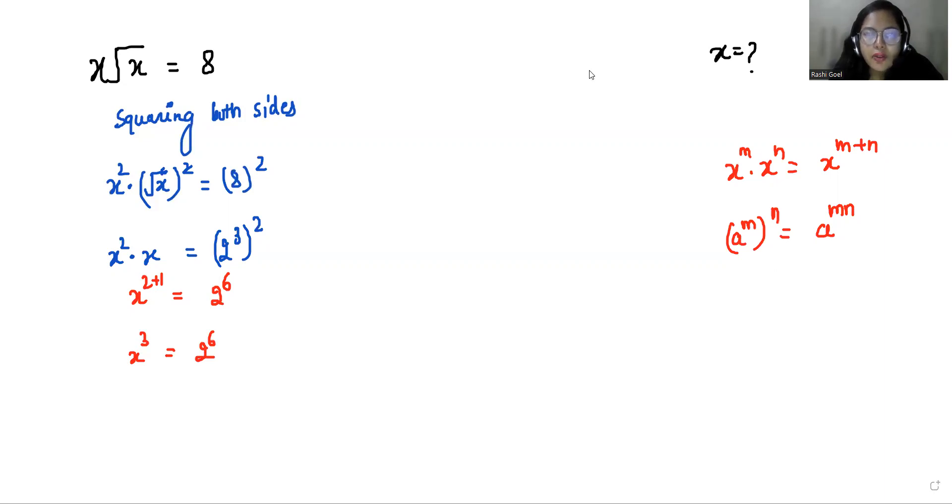Now I'm going to multiply with power 1 by 3 both sides. So we can cancel out this and this. So x equals 2 squared, which is 4.